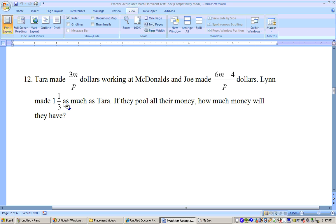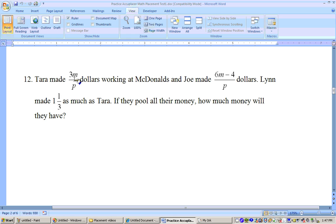The last problem here on the EA section, problem 12 says, Tara made 3M over P dollars working at McDonald's. Joe made 6M minus 4 over P dollars. Lynn made 1 and a third times as much as Tara. If they pool their money together, how much money will they have? Here's the situation. Pooling them together means that we need to add 3M over P plus the 6M minus 4 over P plus 1 and a third times this 3M over P.